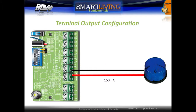A terminal has sufficient power to drive screamers and strobes directly. As this diagram shows, the positive of the strobe connects to an auxiliary +12 volts and the negative connects to the terminal. Only a single strobe or screamer can be driven off of a terminal directly.